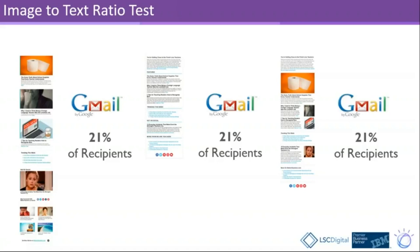So across the board, about one out of every five people on their database were on Gmail. With the example on the left, about 6% of all the opens were occurring on Gmail. So even though Gmail was 21% of the list, those users were only counting for about 6% of opens. When I went to a pretty much 95% text version, that number spiked quite a bit — 21% of recipients were on Gmail, but now they accounted for about 17% of the opens.